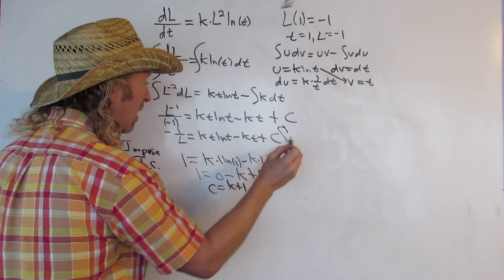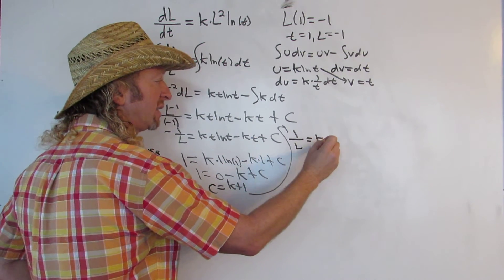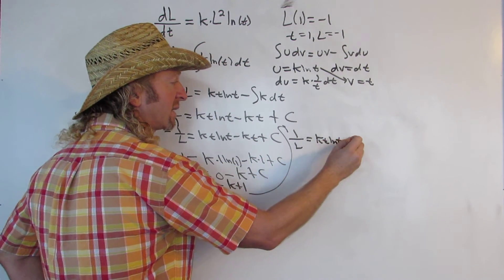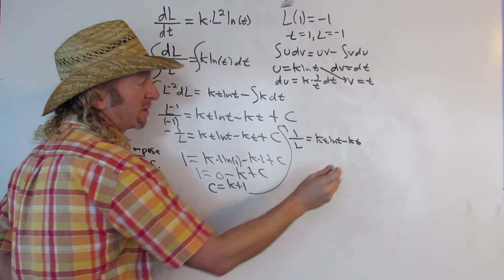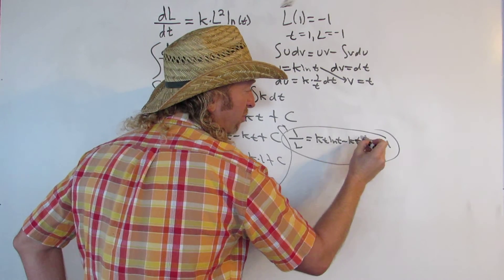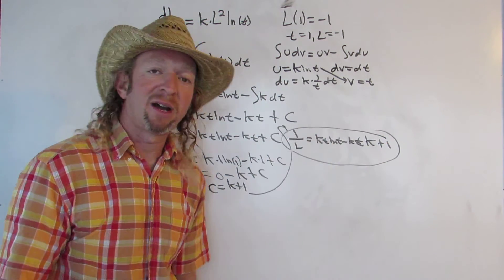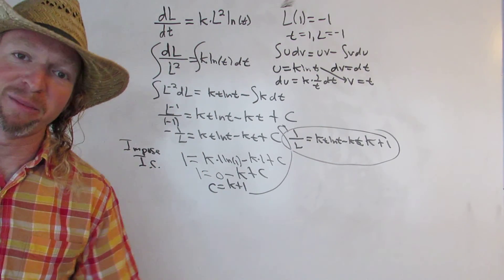So the final answer will be negative 1 over l equals kt ln t minus kt, and then c was k plus 1. And you could solve for l, but nothing in the problem said to do that. But we could solve for big L, we multiply by big L and divide by the rest of the stuff. That's it. Thanks for checking out my channel. Bye-bye.